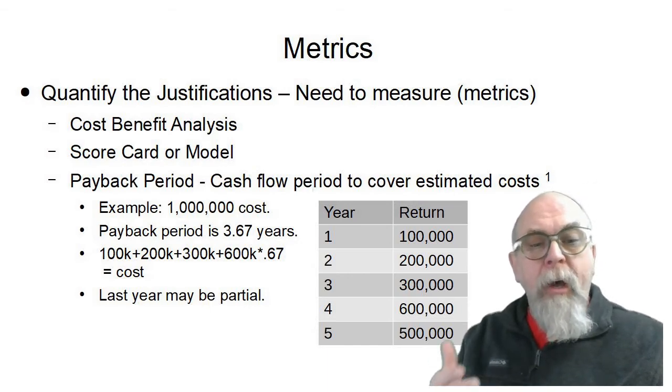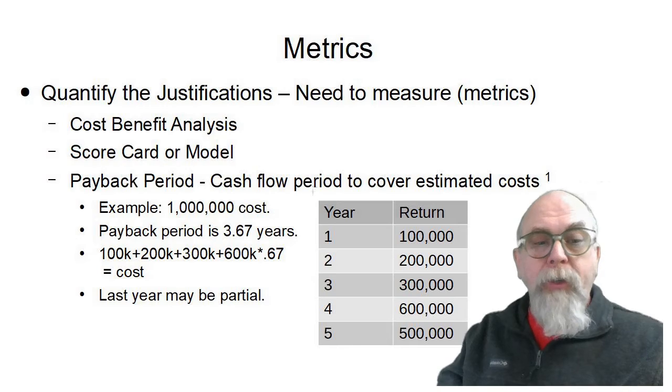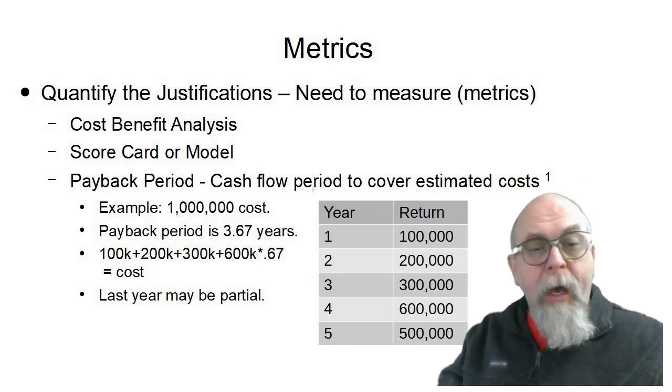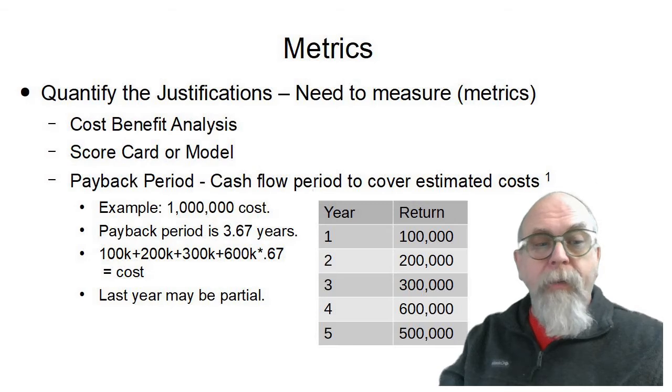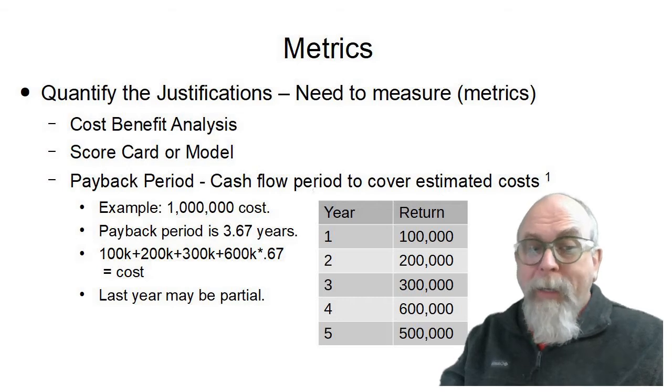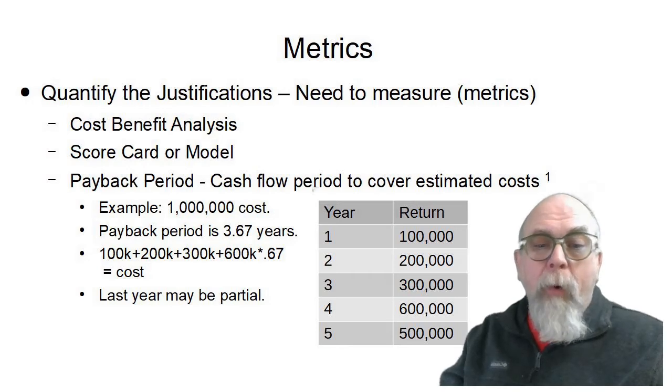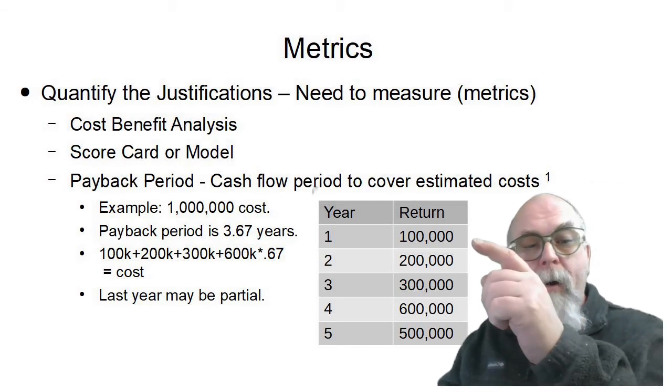We're going to have cash flows coming in over the next five years, as you see in this table, of $100,000 the first year because of the project, $200,000 the second year, $300,000 the third year. And we expect $600,000 the fourth year and a half a million dollars in the fifth year because of this project. Well, it kind of makes sense that we would want to do this project. That's a lot of money coming back in for a million dollar expense. But the question is, how quickly do we pay back that million dollars?